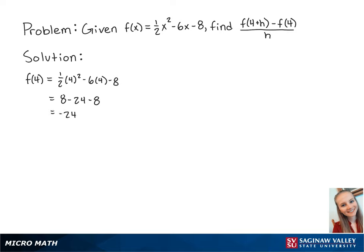Next, we're going to find f of 4 plus h, which is equal to 1 half times 4 plus h squared minus 6 times 4 plus h minus 8. Simplifying this, we get 1 half times 16 plus 8h plus h squared minus 24 minus 6h minus 8.